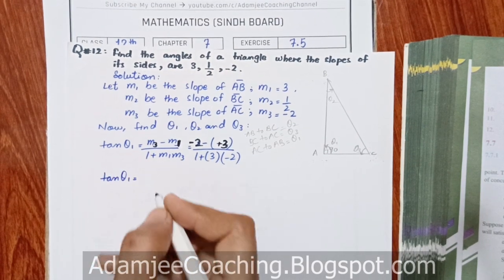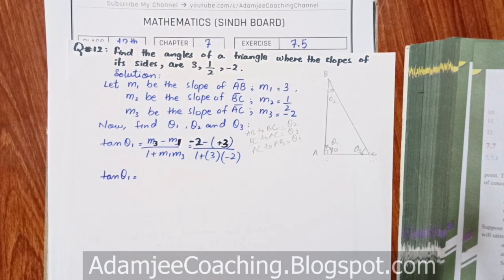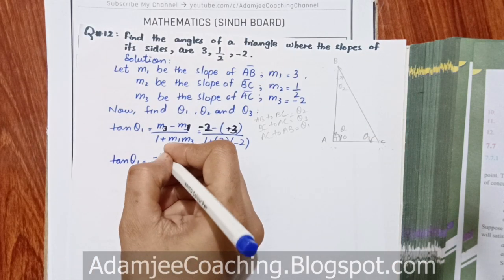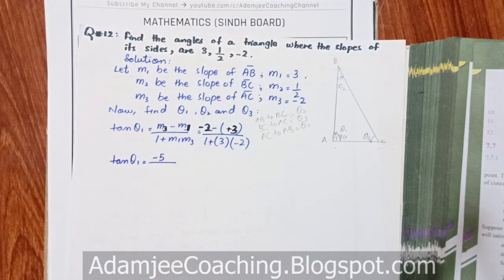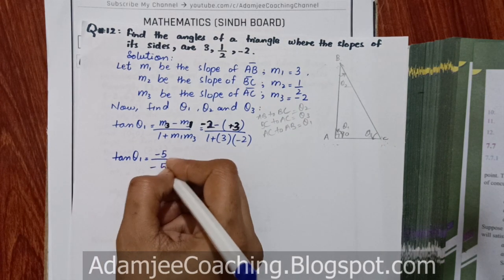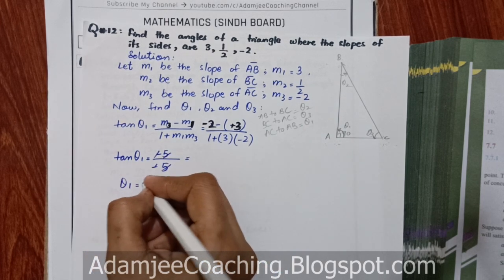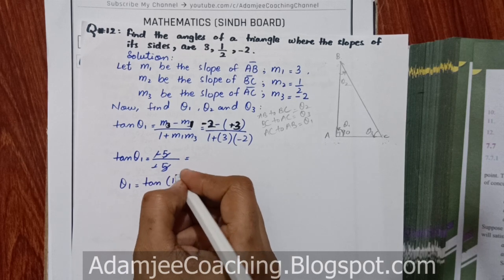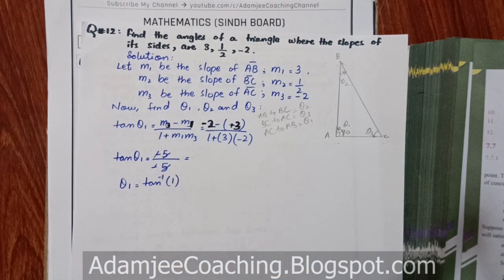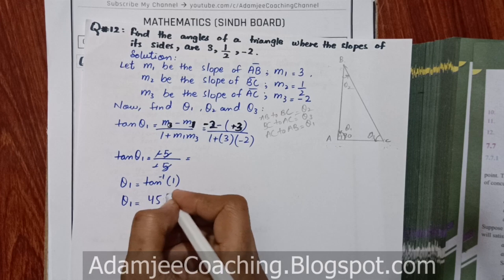Solving: numerator = 3 − (−2) = 3 + 2 = 5. Denominator = 1 + (−6) = 1 − 6 = −5. So tan(Theta1) = 5 / (−5). Taking absolute value, tan(Theta1) = 1. Therefore Theta1 = tan⁻¹(1) = 45 degrees.